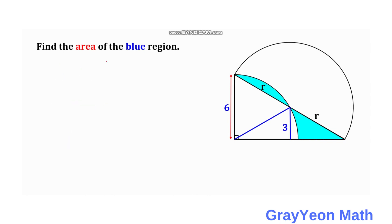Next, we focus on the quarter circle. Notice that the line we drew earlier is also the radius of this quarter circle, given as 6. We form a smaller right triangle with hypotenuse 6 and one leg of 3. Since 3 is half of 6, this is a 30-60-90 special right triangle, so the longer leg has length 3√3.